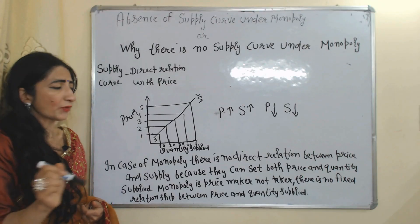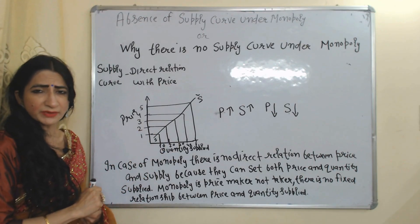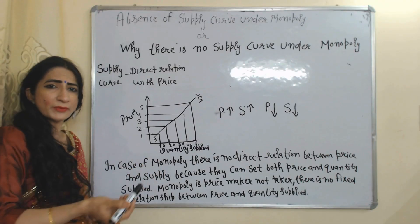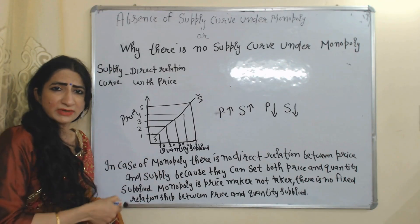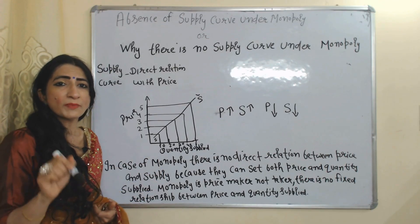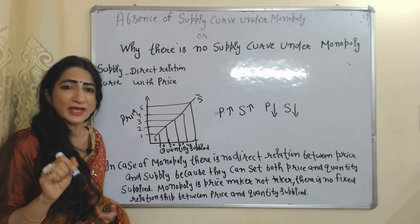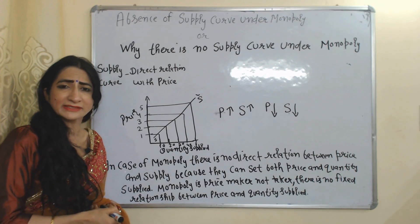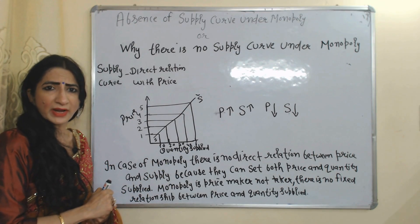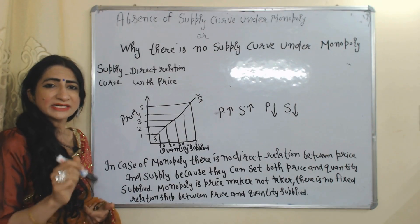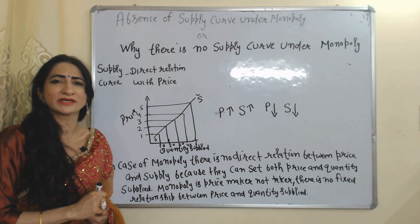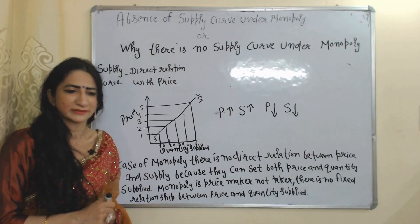This SS is our supply curve, which shows a direct relationship between price and quantity supplied. But in the case of monopoly, there is no direct relationship between price and quantity supplied, because monopoly can set both price as well as quantity supplied. Second, monopoly is a price maker, not a price taker, so there is no fixed relationship between price and quantity supplied.